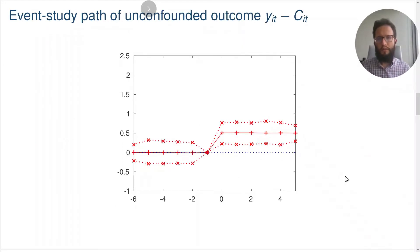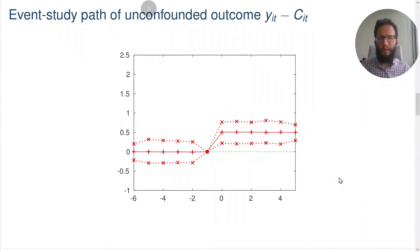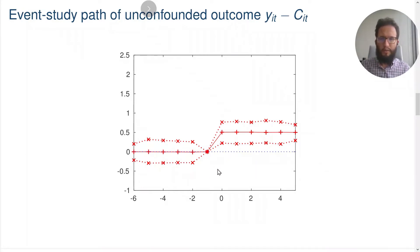Let me tell you what the true effect of the policy is in the simulation designs. What we're plotting here are trajectories of the unconfounded outcome Y_IT minus C_IT, and in the actual simulations the effect of the policy on the outcome is a permanent increase of 0.5 units. We're showing trajectories across a thousand different simulations. The line in the center with the plus signs is the median trajectory, and the other lines with the x's are the 2.5 and 97.5 percentiles. It's important to stress that these are not confidence intervals — they are percentiles of the trajectories across a thousand different simulations.